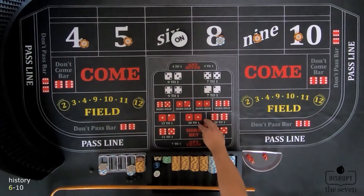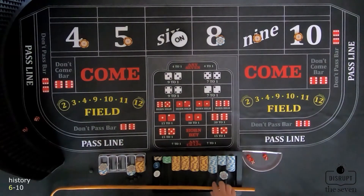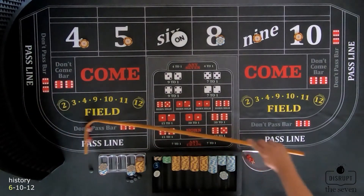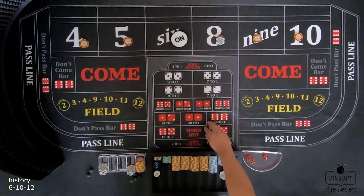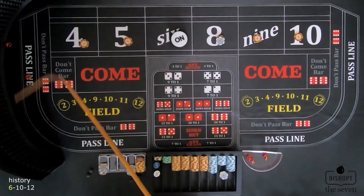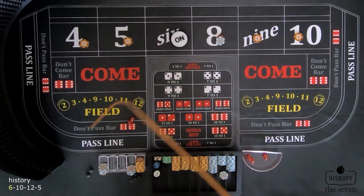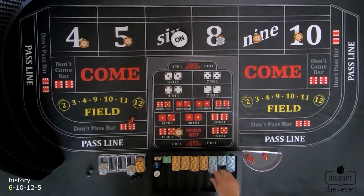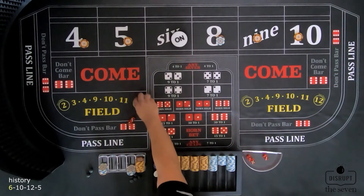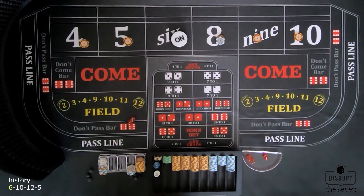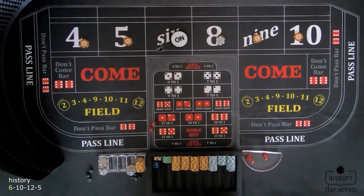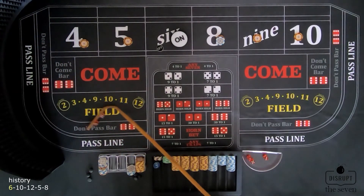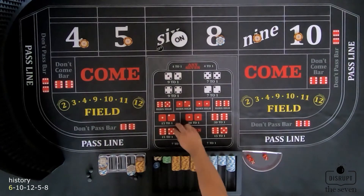Shooter is ready — collects the dice, shoots. And 6-6, 12. Nothing happens, but this is the second roll. Shooter will try again — 3-2, easy 5. We have a unit on the 5 and the bank pays us $7. Collect again — no press. That is the third roll, so now we tell the dealer we want our bets turned off. Shooter takes the dice and shoots — 5-3, easy 8. We have a bet on the 8, but bets are off so nothing happens.